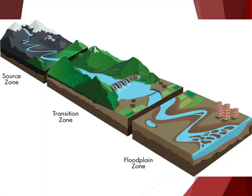River systems start at springs and small streams and increase in size as they gather water. They can be divided into zones based on position between the source and the sea. We divide them into three zones: source zone, transition zone, and floodplain zone. Although no two rivers are exactly alike, each of these zones has characteristic abiotic and biotic features.